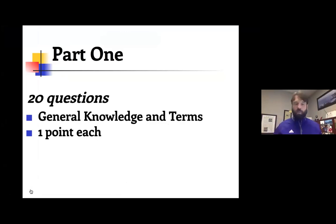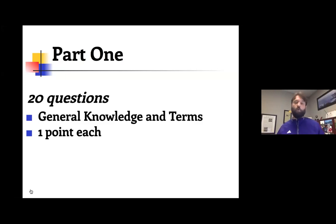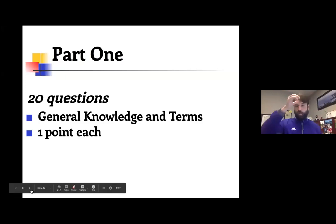Part One is 20 questions, one point apiece, up to 20 points — general knowledge and terms. Every year a new list comes out based on the topic with people and terms. It's always under 300 items. The people make up a good portion of it, but there are more terms than people. This year definitely has more people than I've ever done, but there are still more terms than people.